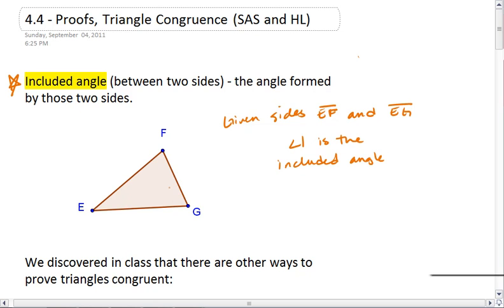We could also see that I could look at different sides, perhaps FG and EG, in which case angle 3 would be the included angle. Or we could look at sides EF and FG, in which case angle 2 would be the included angle.